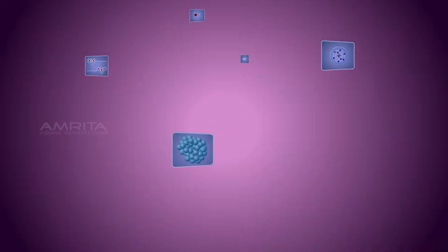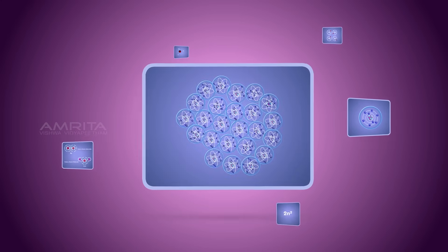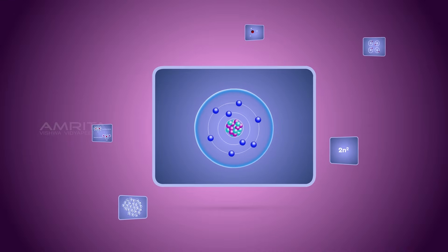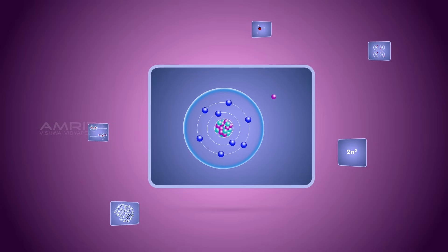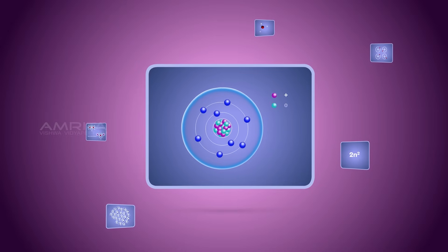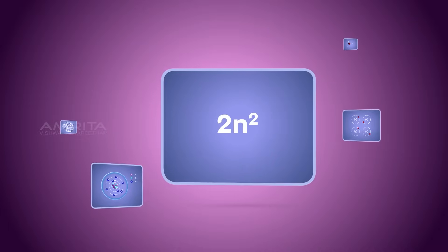Things to remember: Building blocks of matter that we see in the universe are atoms. Protons, neutrons, and electrons constitute an atom. Protons have a positive charge, neutrons have no charge, and electrons are negatively charged. The maximum number of electrons present in a shell is given by the formula 2n².